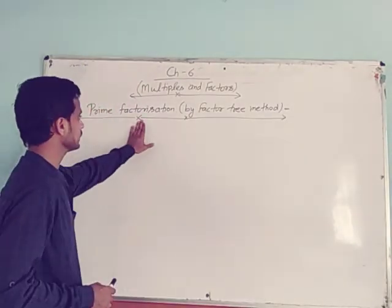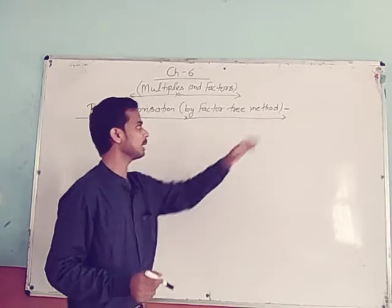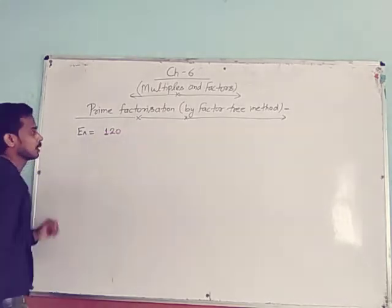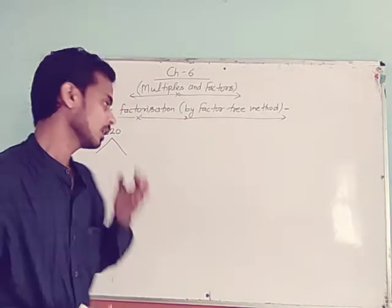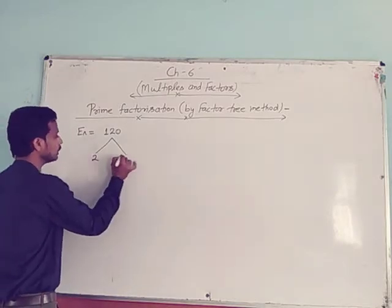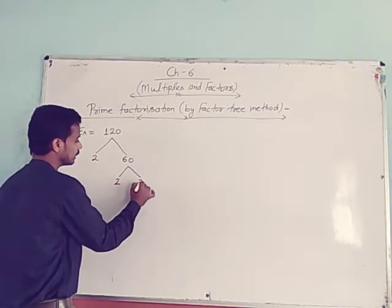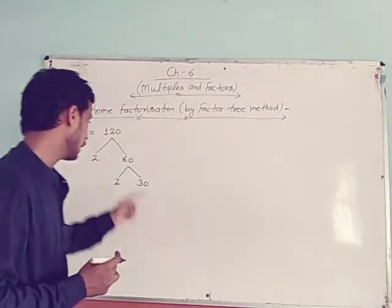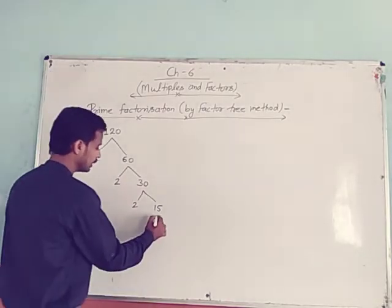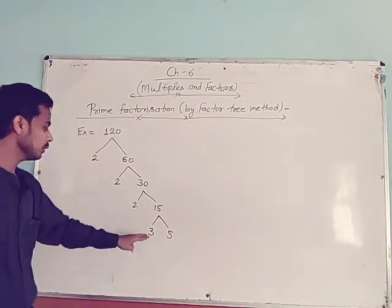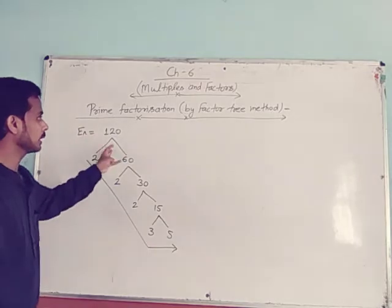Now, prime factorization by the factor tree method. I am going to solve 120 using the factor tree method. Convert 120 into 2 parts: write 2 × 60. Then divide 60 into 2 parts: 2 × 30. Again divide 30 into 2 parts: 2 × 15. Then divide 15 into 2 parts: 3 × 5. When you get all prime numbers — 2, 2, 2, 3, and 5 — these are the factors of 120.